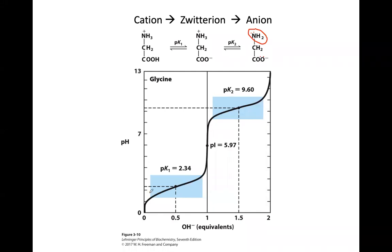If we go all the way to the left, before we've added any base, all we have is glycine at a very low pH close to zero. In this state, both sides are protonated — the amino group has a positive charge, and the carboxylate is protonated, removing its negative charge. As we start adding hydroxide ions, a very strong base, it starts to remove the most easily removable proton, which will be on the carboxylic acid. The pKa of the carboxylic acid in glycine is 2.34.